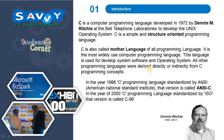C is a computer programming language developed in 1972 by Dennis Ritchie at the Bell Telephone Laboratories to develop the Unix operating system. C is a simple and structure-oriented programming language. C is also called the mother language of all programming languages. It is the most widely used computer programming language, used for developing system software and operating systems.